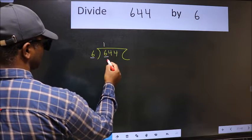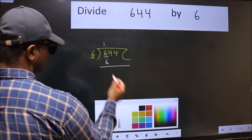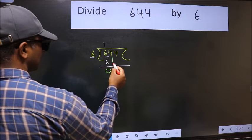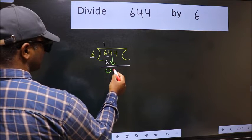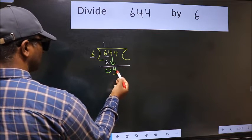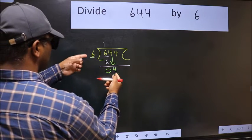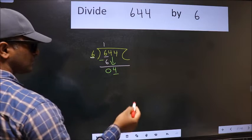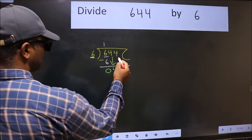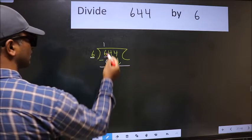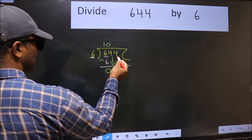Now we should subtract. We get 0. After this, bring down the next number, so 4 comes down. Now here we have 4 and 6 here. 4 is smaller than 6, so we should bring down the second number. The rule to bring down the second number is we should put 0 here, then only we can bring this number down.